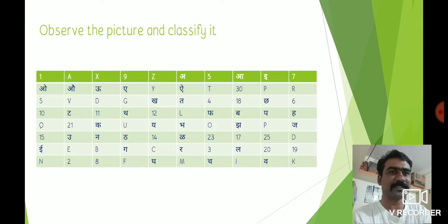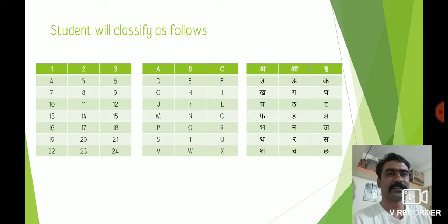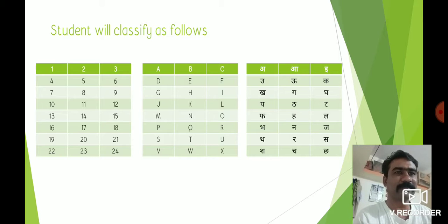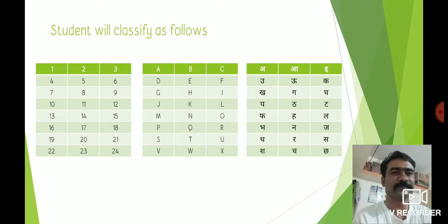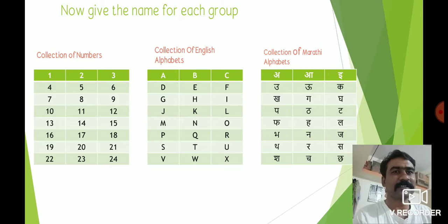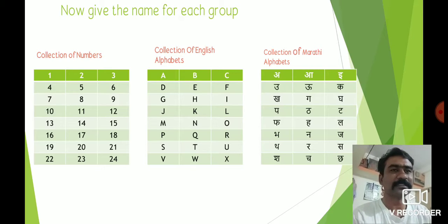Now see the classification — students will classify as follows. In the first table, students write some numbers. In the second table, students write English alphabets, and in the third table, students write Marathi alphabets. After classifying, students have to give a name to each group: first is the collection of numbers, second is the collection of English alphabets, and third is the collection of Marathi alphabets.